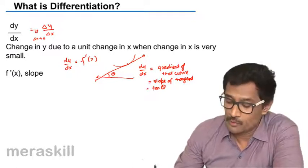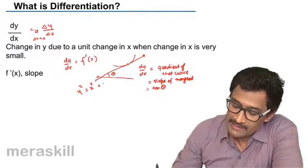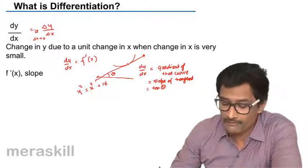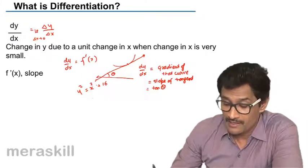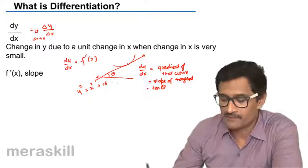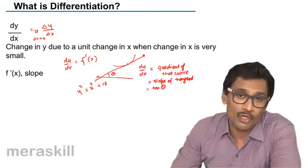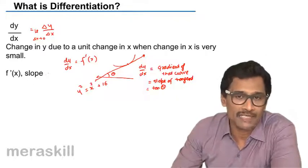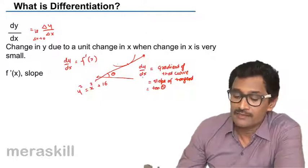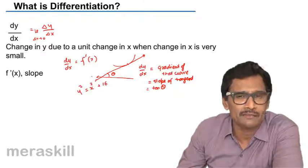Given a particular function, say y equals x² + 16, when you find the derivative of this using the same formula, that itself is the slope of the tangent at any point. Hence, whether you call it f′(x) or dy/dx, it is also the slope of the tangent to that particular curve. This is the basic concept about differentiation — the more we repeat, the clearer our concepts become.